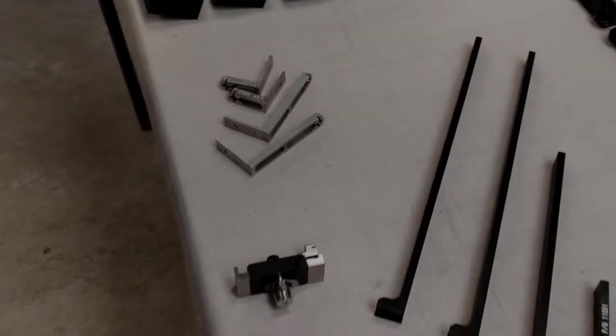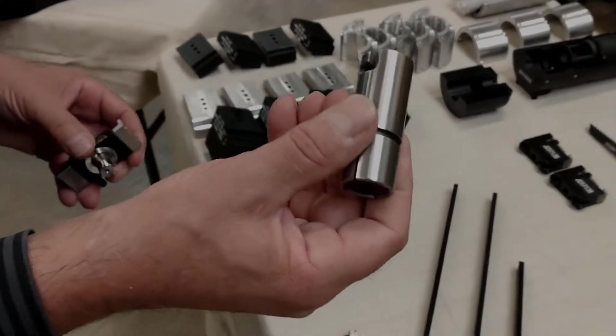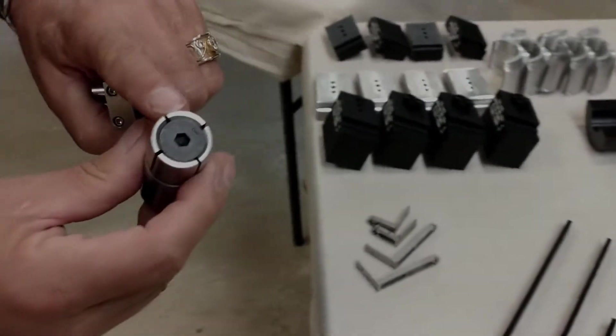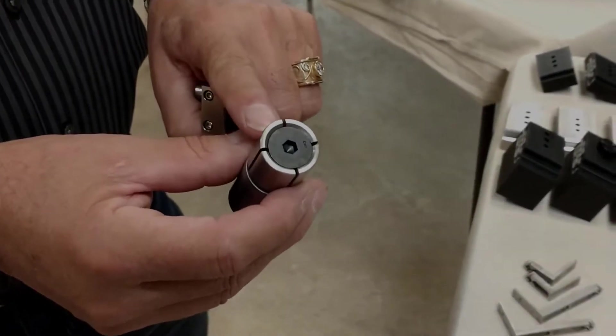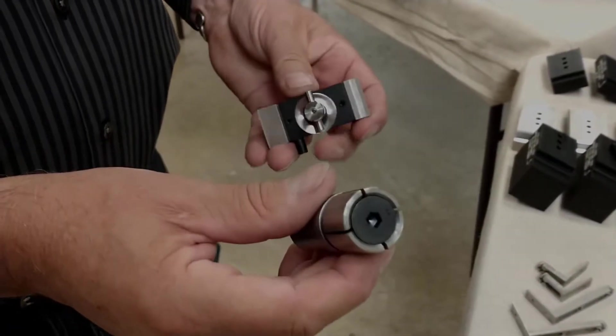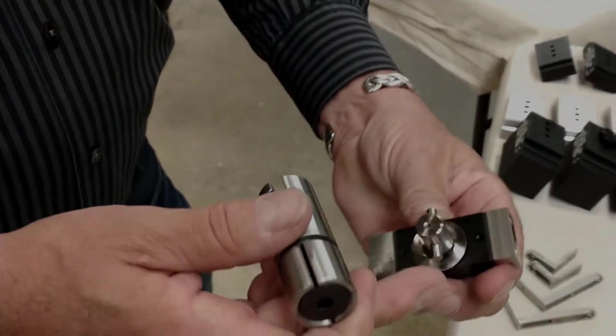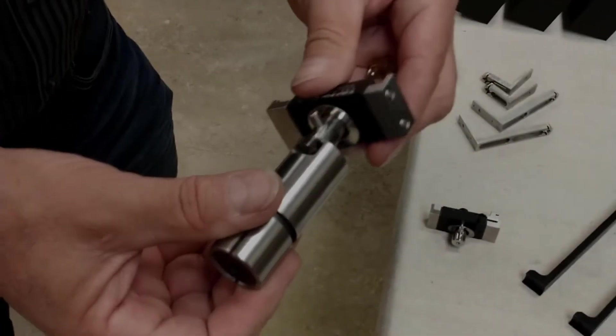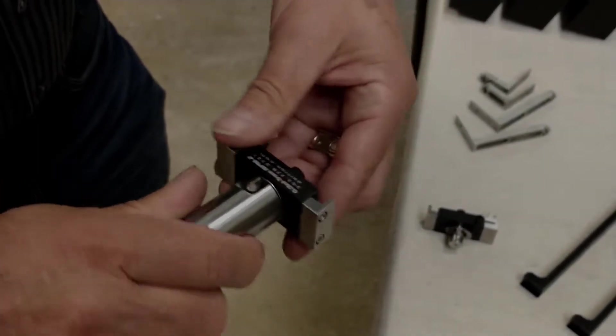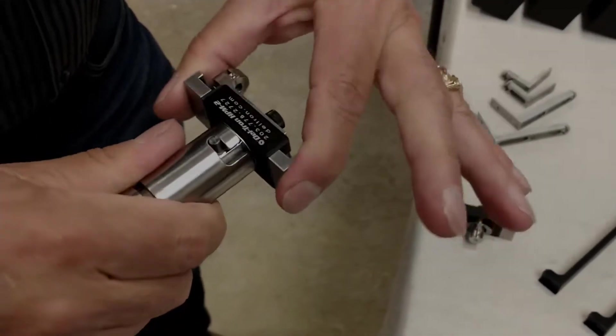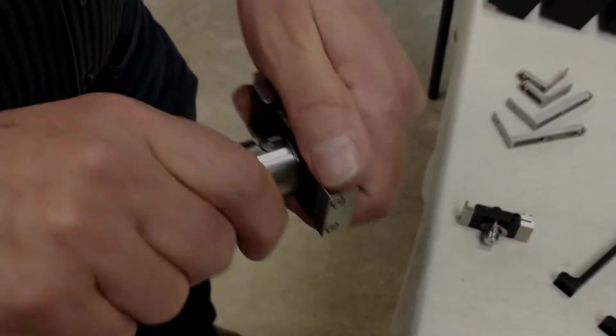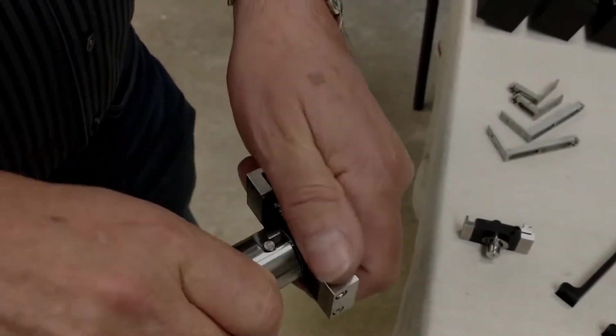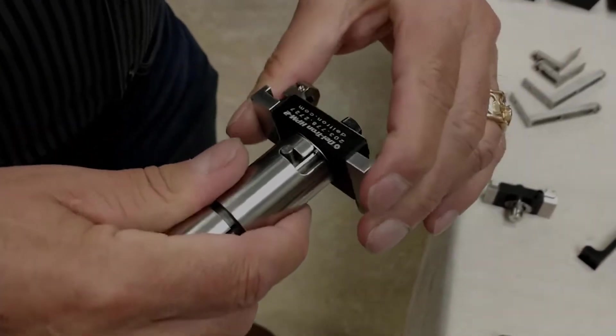We also have a quick change. We call this a bayonet connector. This particular one was designed for the ultrasonic machine. There's a bar that goes across here and then this cam shape in here. And you literally just slide that in and twist it and it holds it rigid. There's a wavy spring in here. It keeps constant tension on it so it's not loose.